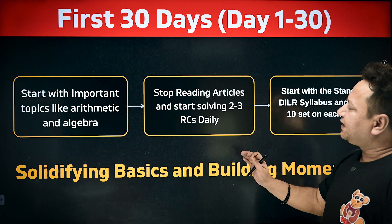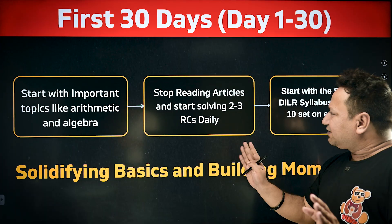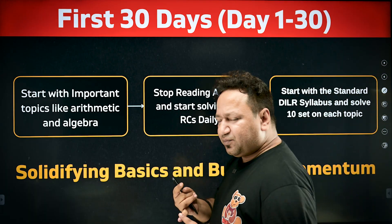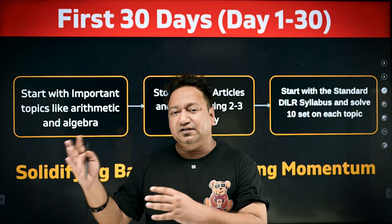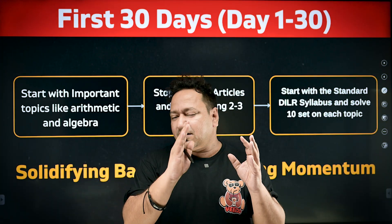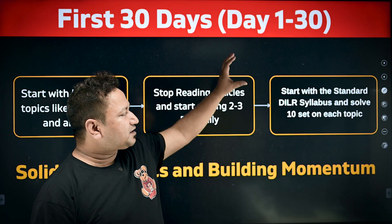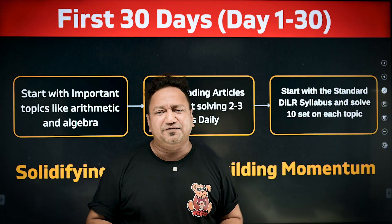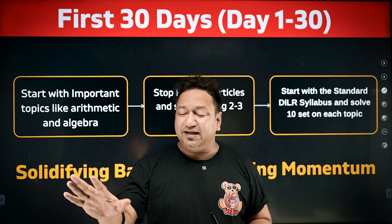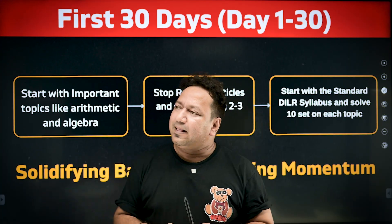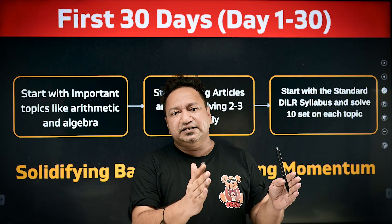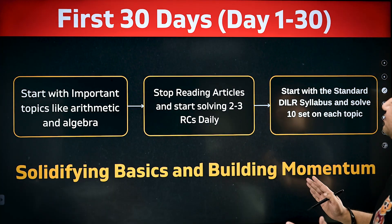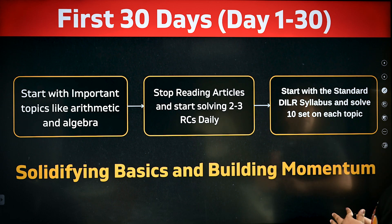In VRC, stop reading articles from sources like The Hindu editorials — it's not going to help anymore. Start solving two to three RCs every day from the iQuantus dashboard, which has multiple RCs and previous year questions that you can download or attempt as a live mock. For DILR, start with the standard DILR syllabus and solve 10 sets on each topic in the first 30 days. There are close to eight to nine topics in DILR. Resources are also available in the crash course — LRDI Inception and LRDI Essentials videos have many sets. This first phase, day 1 to 30, is all about solidifying the basics and building momentum.